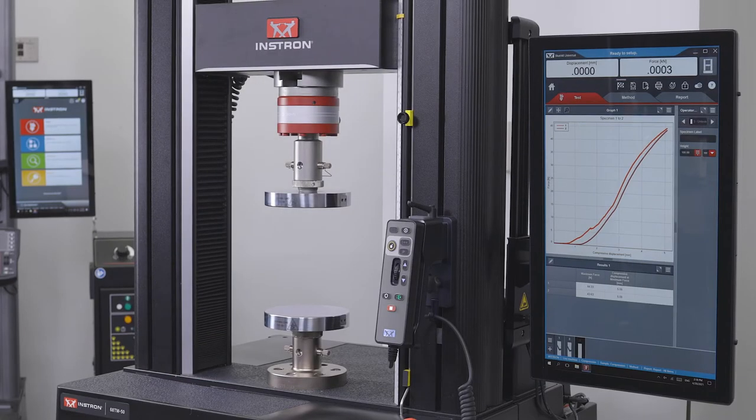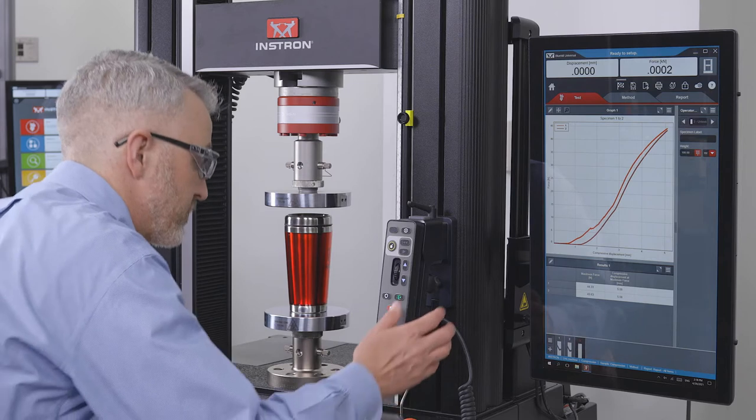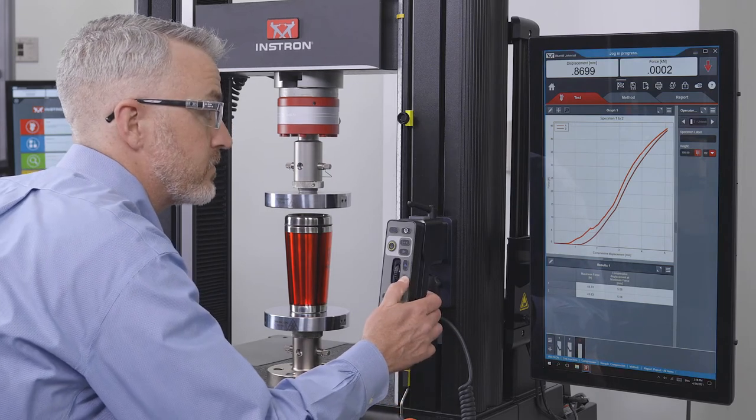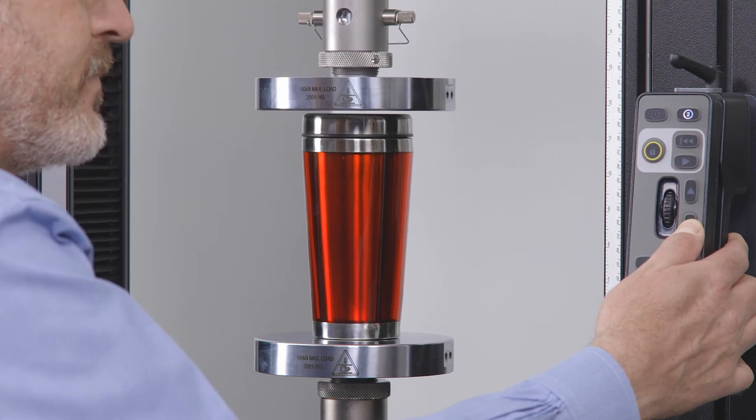Collision Mitigation is an enhanced feature that comes standard on all Instron 3400 and 6800 series testing systems. It is designed to stop crosshead motion anytime an unexpected force is detected during jogging or returning.